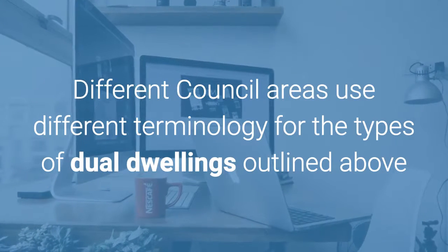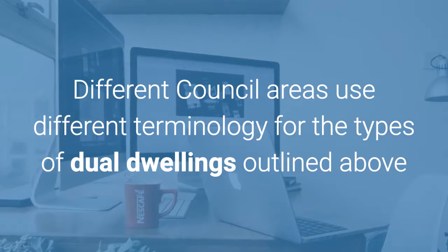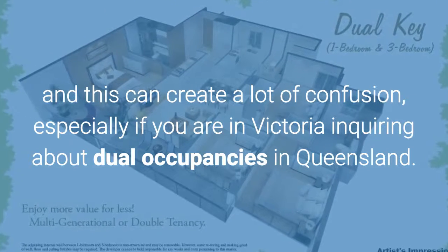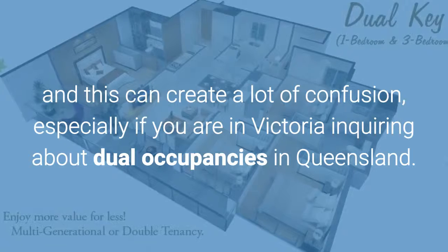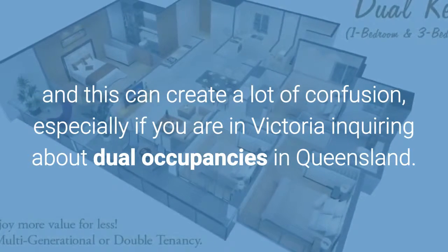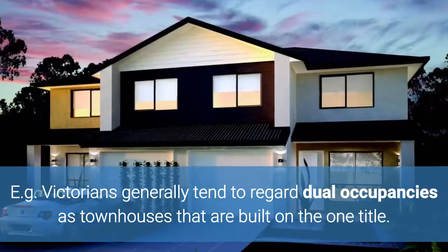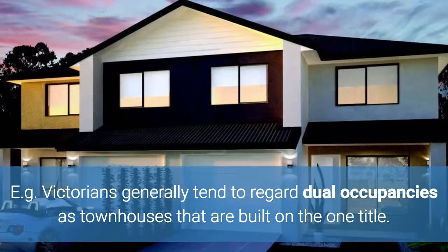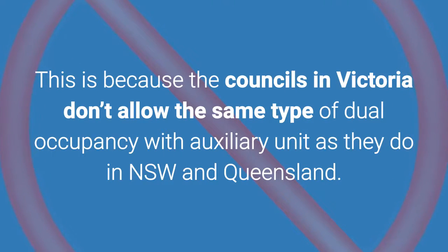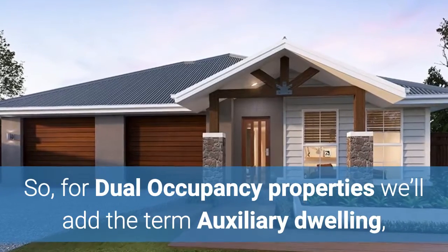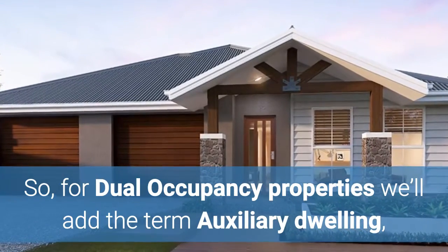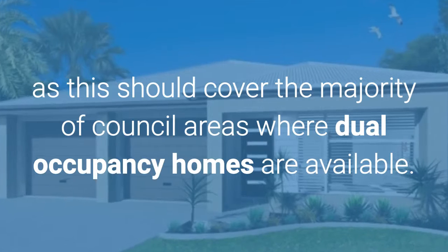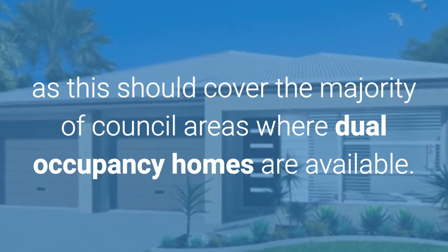Different council areas use different terminology for the types of dual dwellings outlined above, and this can create a lot of confusion, especially if you are in Victoria inquiring about dual occupancies in Queensland. For example, Victorians generally tend to regard dual occupancies as townhouses built on the one title, because councils in Victoria don't allow the same type of dual occupancy with auxiliary unit as they do in NSW and Queensland. So for dual occupancy properties, we'll add the term auxiliary dwelling as this should cover the majority of council areas where dual occupancy homes are available.